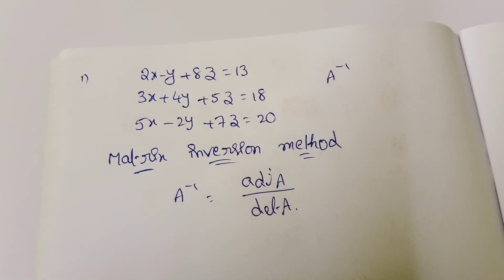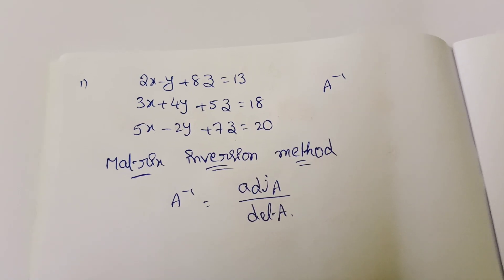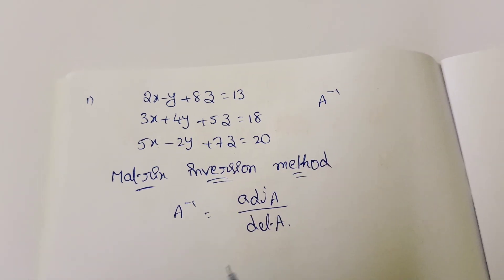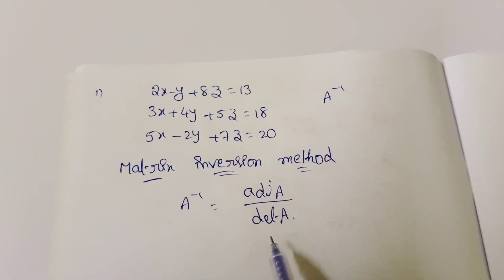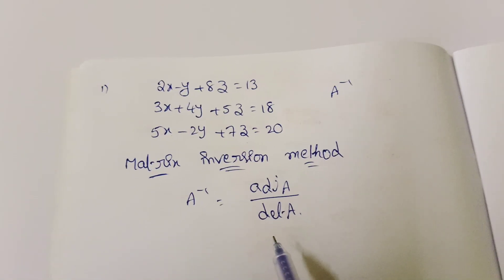What is adjoint A and what is determinant A? Let's discuss. First, we find the determinant of A.